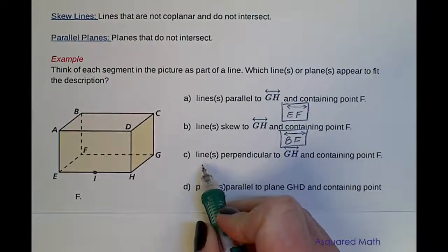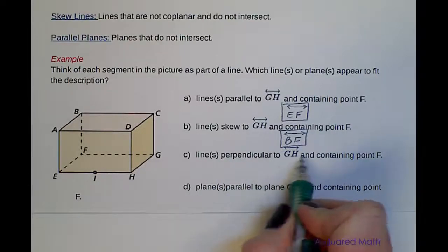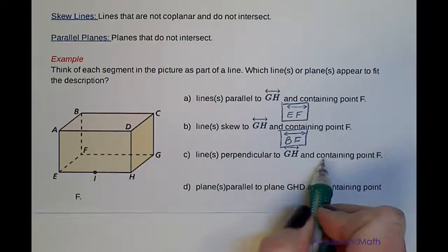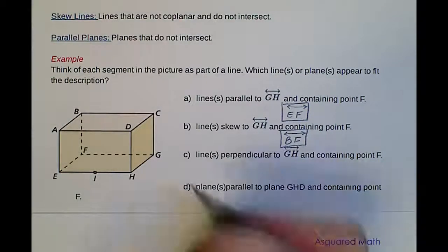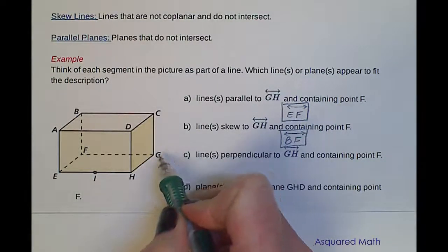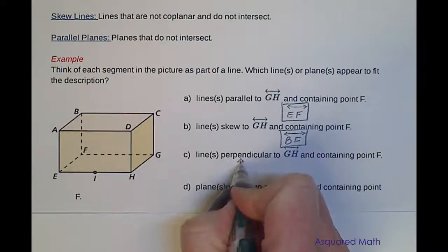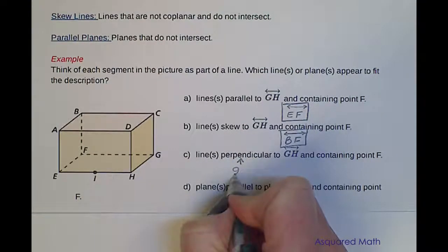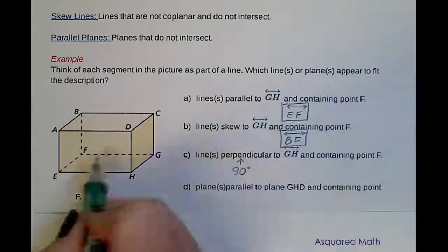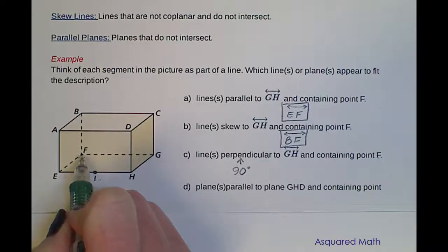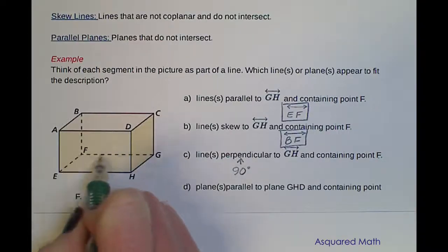Part C asks us to identify perpendicular lines to GH that contain point F. Perpendicular means 90 degrees. So we need something that's 90 degrees to GH and contains point F. Point F is here, so we are looking at this back line FG.